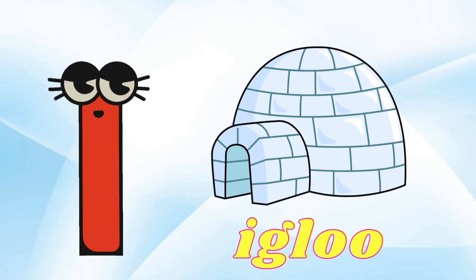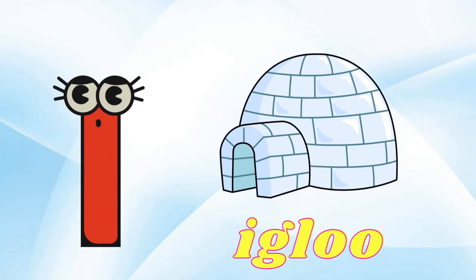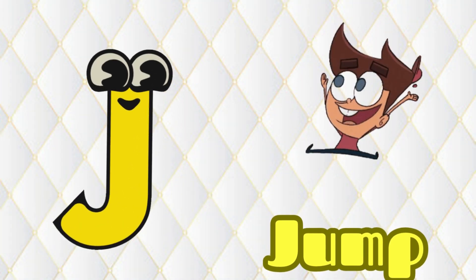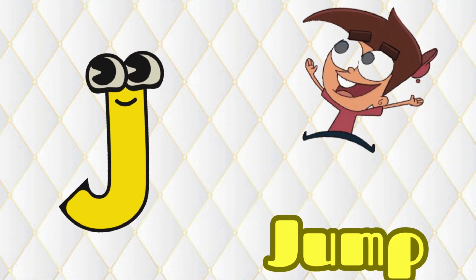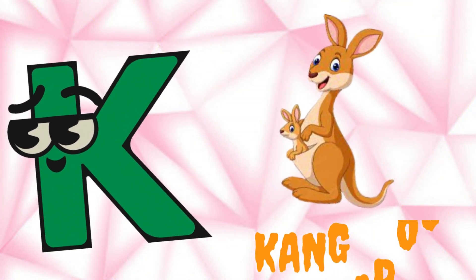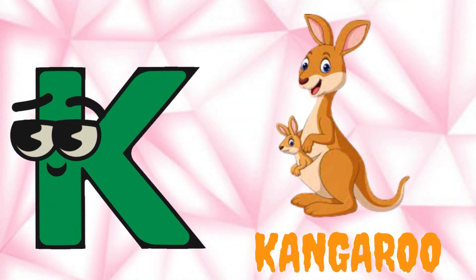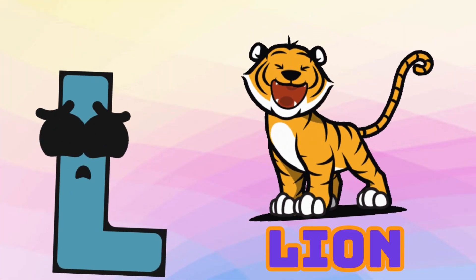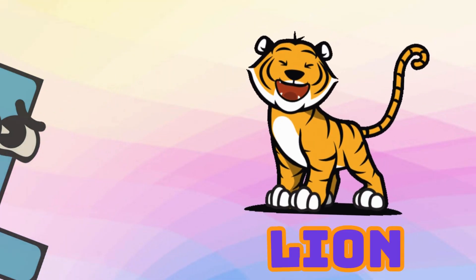I is for Igloo, I-I-Igloo. J is for Jump, J-J-Jump. K is for Kangaroo, K-K-Kangaroo. L is for Lion, L-L-Lion.